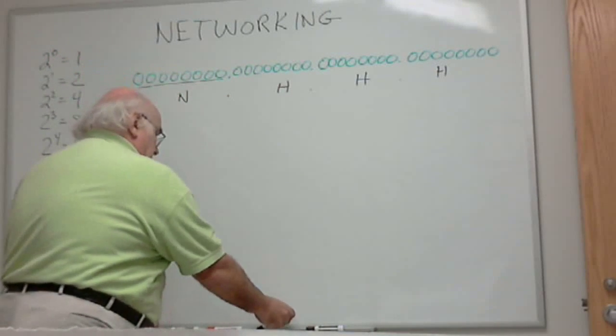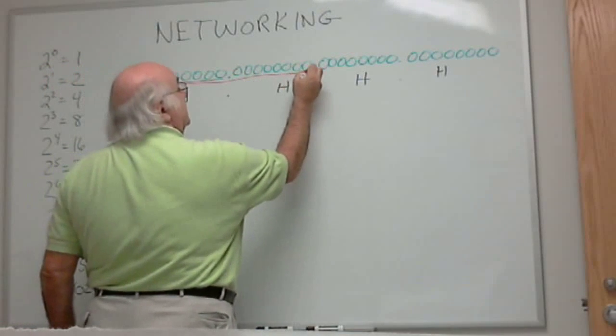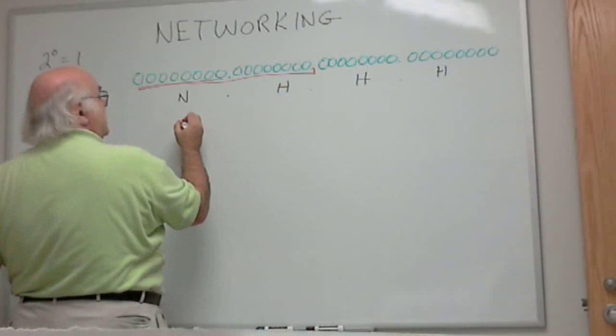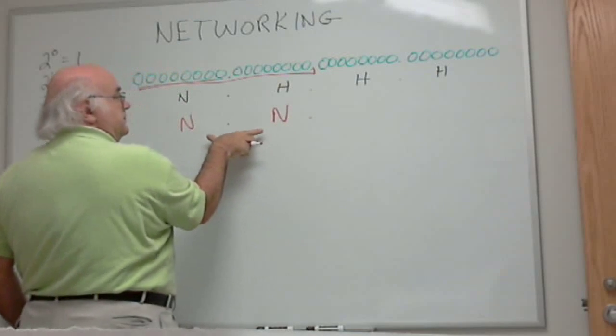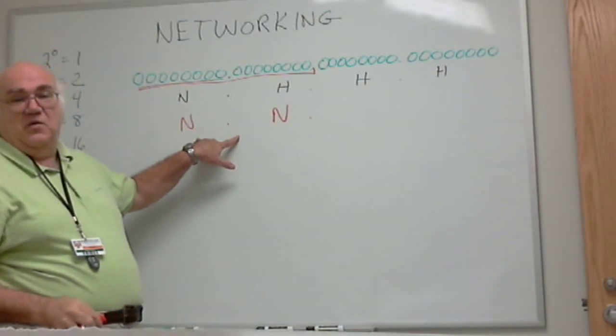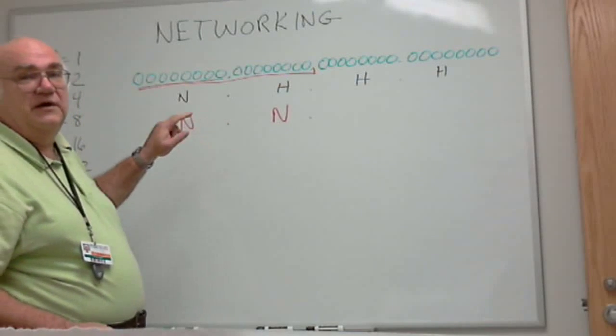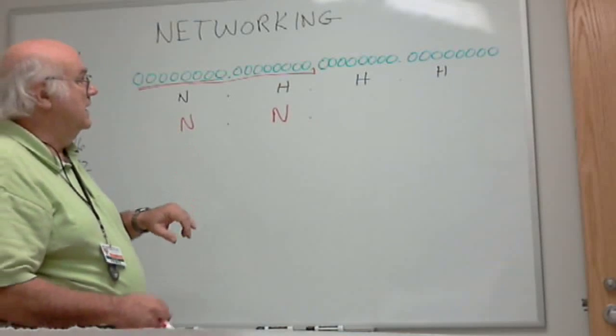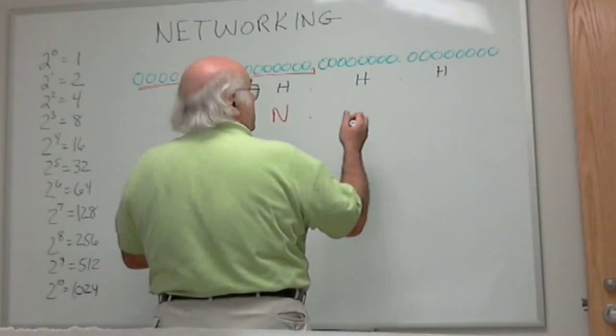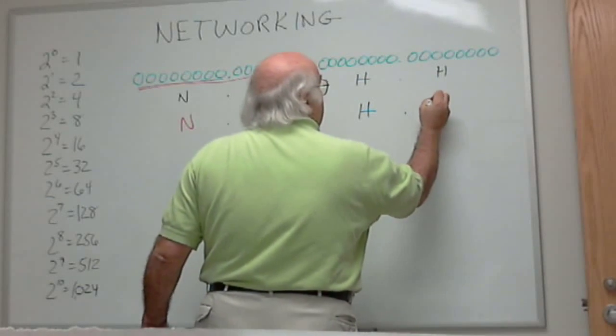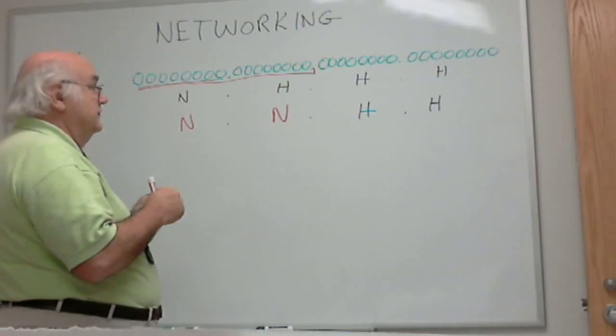The other situation I could have was to have these two bytes represent a network address. So I could have 2 to the 16th networks, which was 64,000 different numbers, approximately. Which then made the last two bytes host. So I could have 64,000 network addresses and 64,000 host addresses.